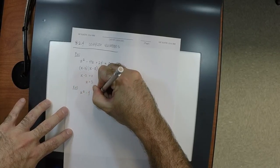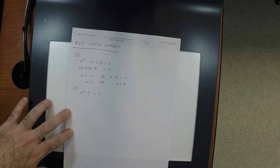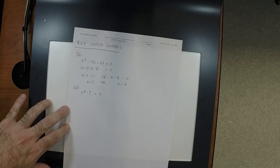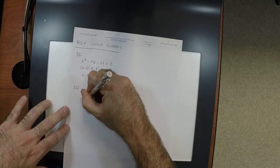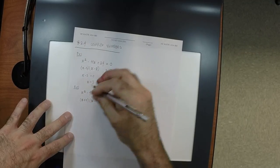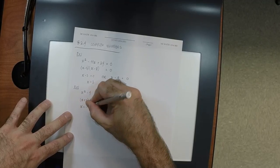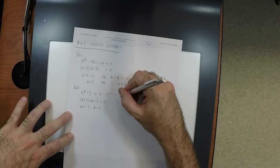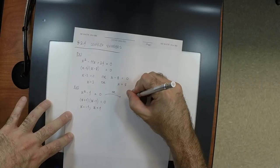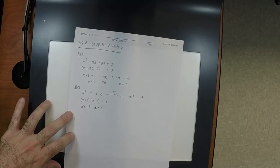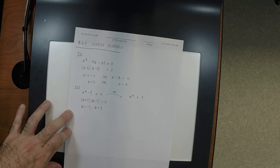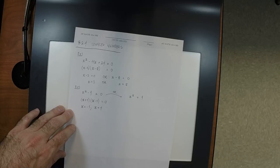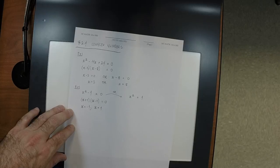A slight variation: x squared minus 1 equals 0. This factors as the difference of squares. Equivalently, x squared equals 1. Is there anything you can square to get 1? Yes — 1 squares to 1, and negative 1 also squares to 1. So x equals 1 or x equals negative 1.